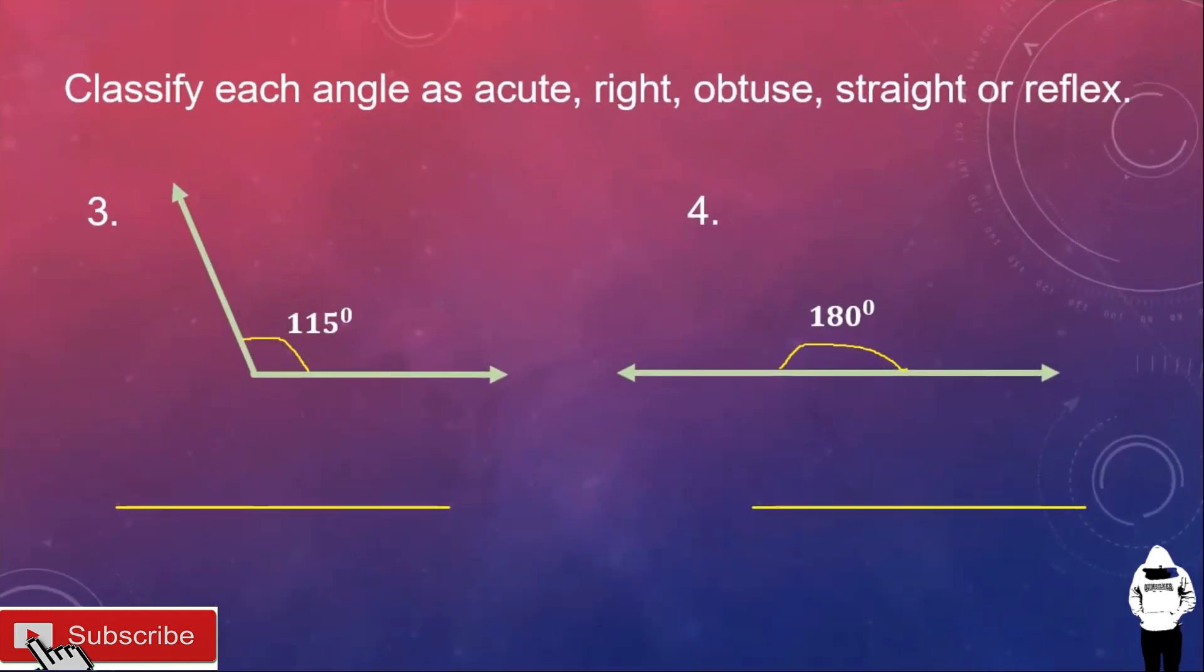Number three, this angle measures 115 degrees. So, this is greater than 90 degrees but less than 180. So, this is an obtuse angle.